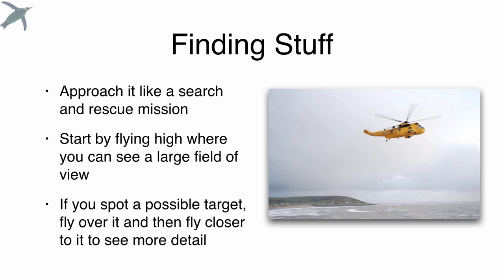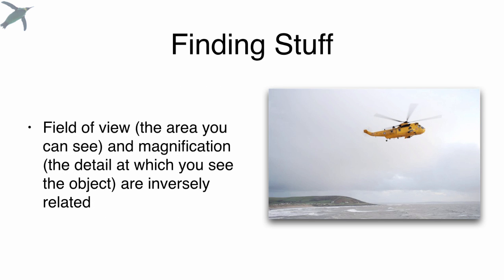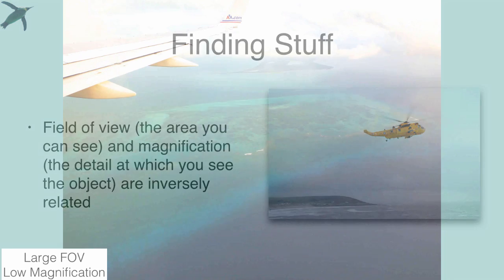What you see is a very large area, what we call the field of view. You don't see very much detail though. So if you spot a possible target, then what they do is fly over it and then come down in altitude. What they're doing is getting closer so you can see it in more detail. So the field of view, that is the area that you can see, and the magnification, which is the detail, they're inversely related.